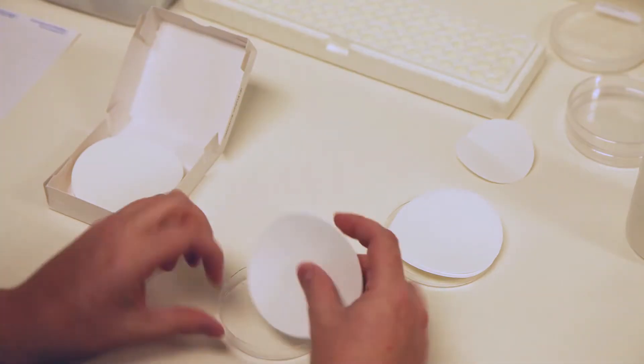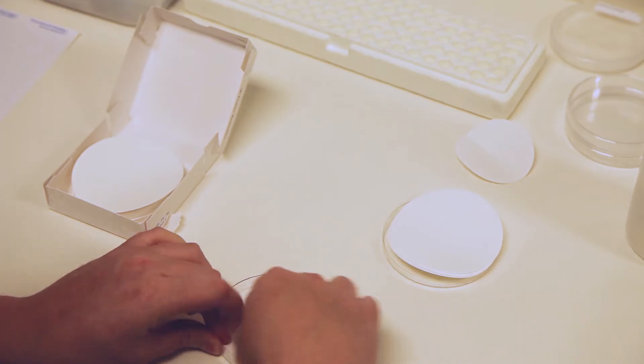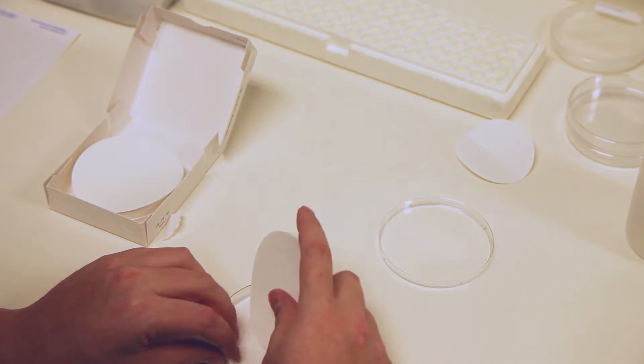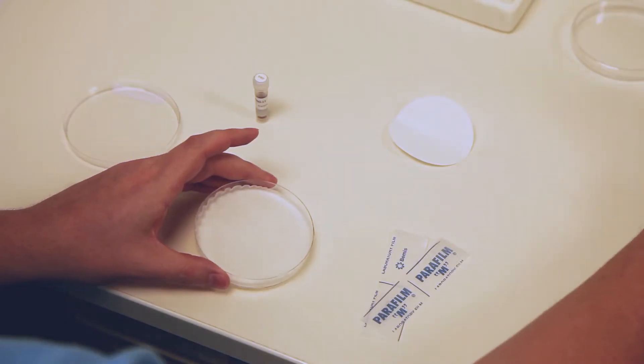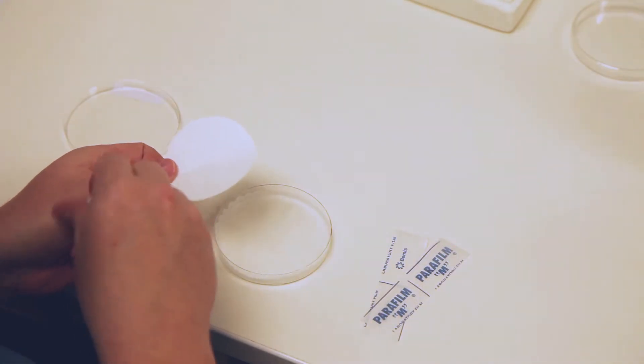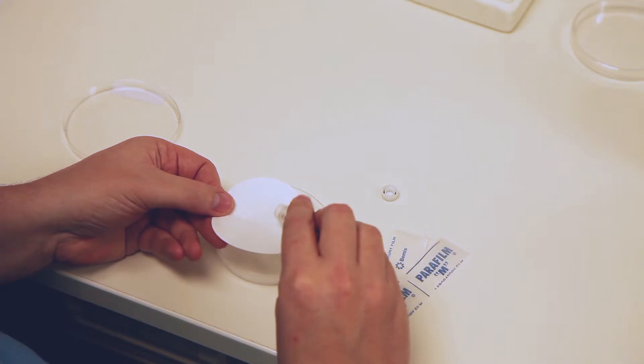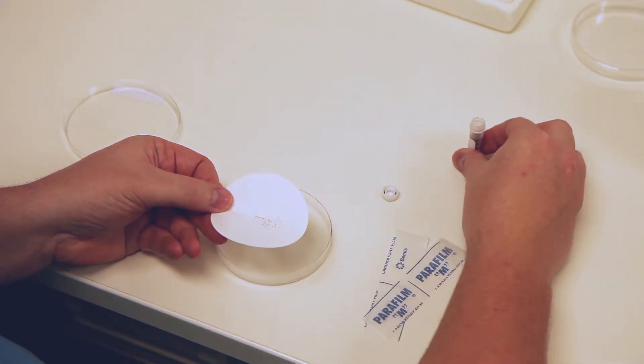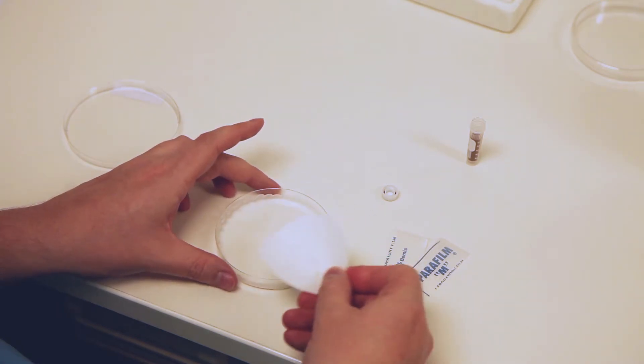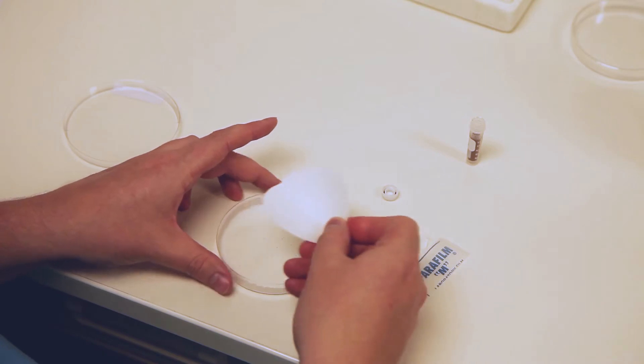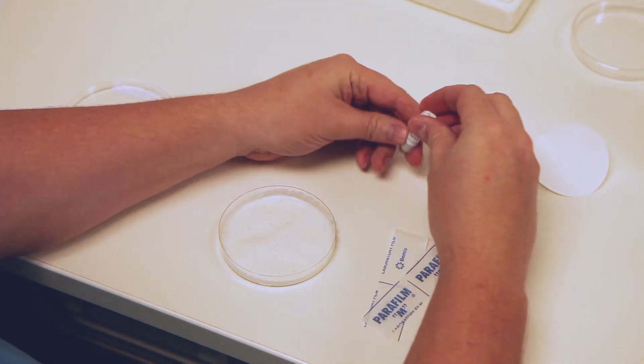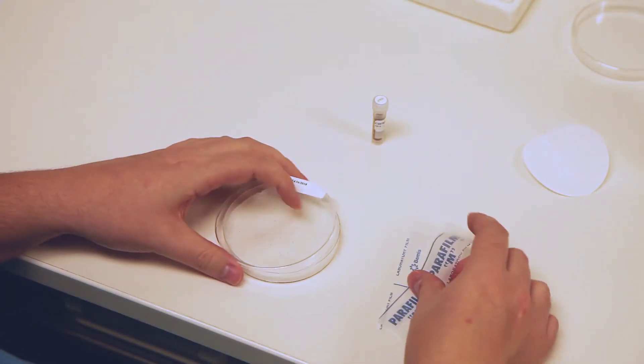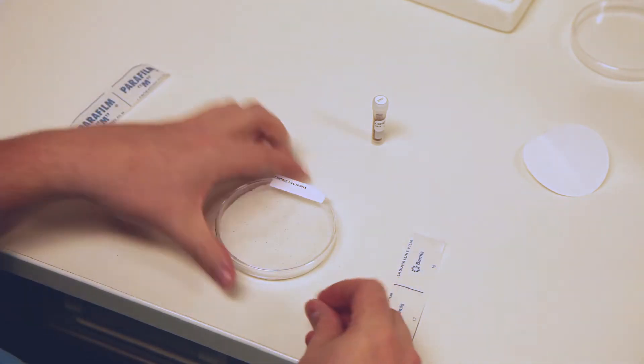In a clean working area, remove the lid of a petri dish and press four pieces of filter paper into the dish. Add distilled water to the petri dish to wet the filter paper. Distribute approximately 100 seeds on the filter paper. Place the lid on the petri dish and wrap the dish with two pieces of parafilm to seal the plate.